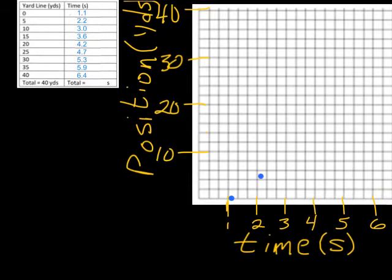Our third mark, based on that it's at 3 seconds and 10 yards, will be right here. After that comes 3.6 at 15 yards. So, 3.6 is going to be just inside of this line. And, we're going to go up to 15. And, 15 is going to be right about there. So, I'm going to put a mark right there.